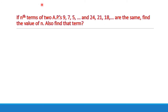We are given two APs: 9, 7, 5, etc. and 24, 21, 18, etc. A particular term of these two APs is the same — it may be the 10th term, 16th term, 20th term, or any term. We have given the name of that term as the Nth term. We need to find which term is equal and also find the value of that term.